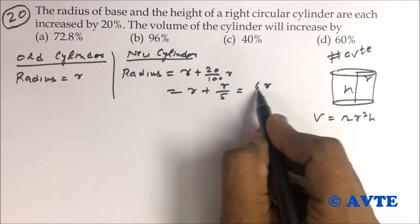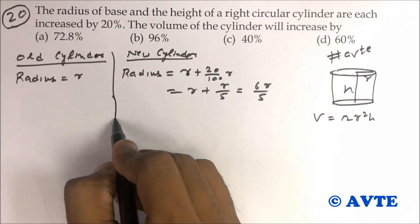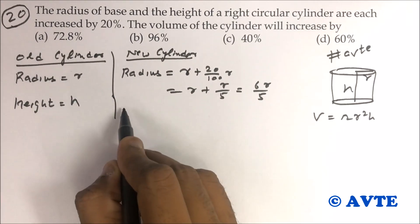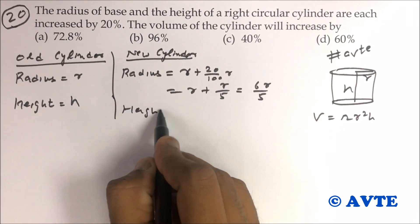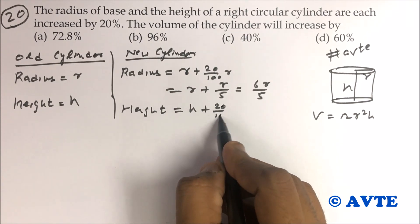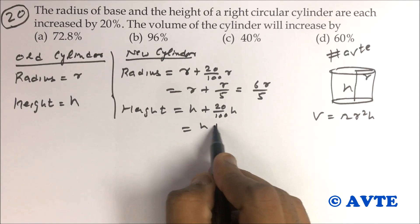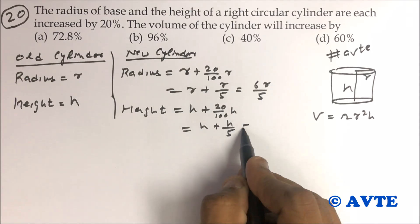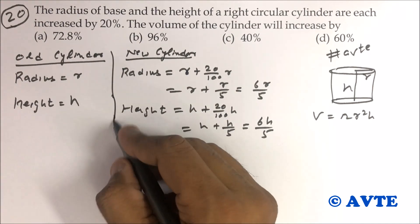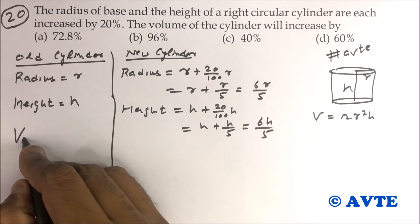That is R plus R by 5, which equals 6R by 5. Guys, if height is h, then new height will be h plus 20% of h, that is h plus h by 5.